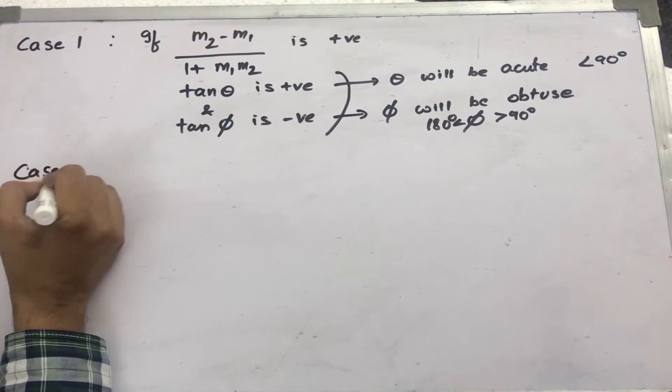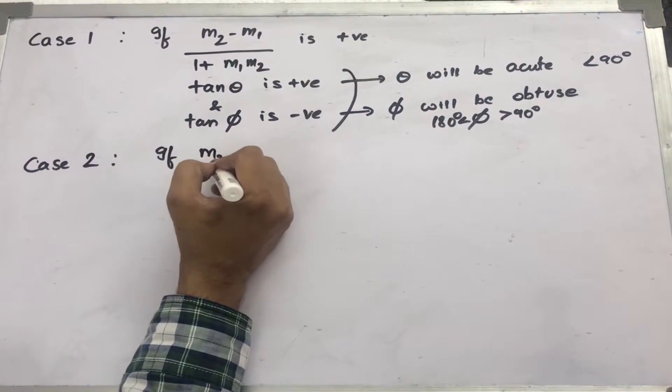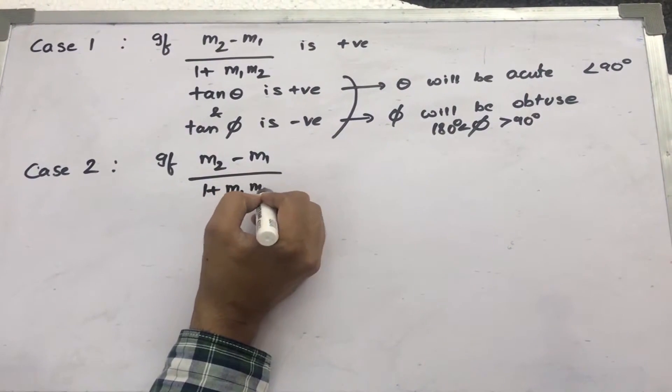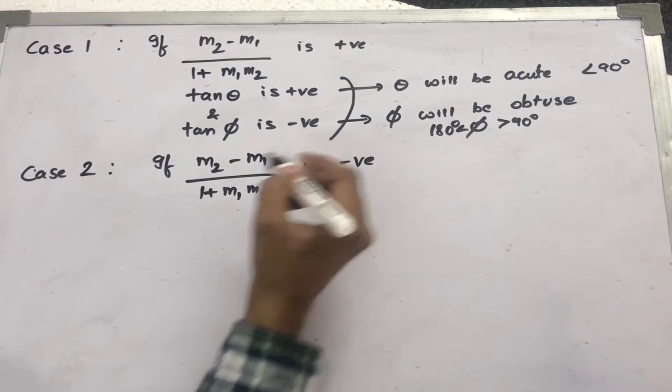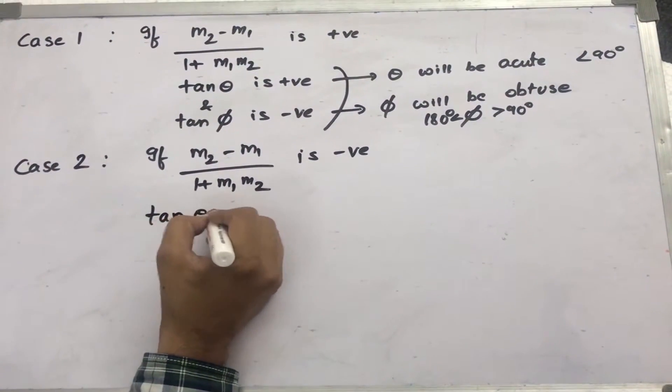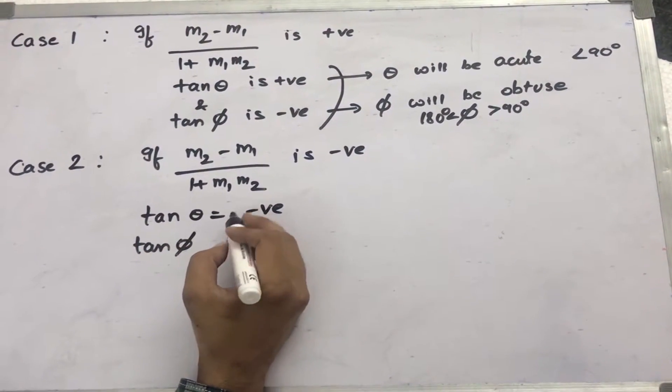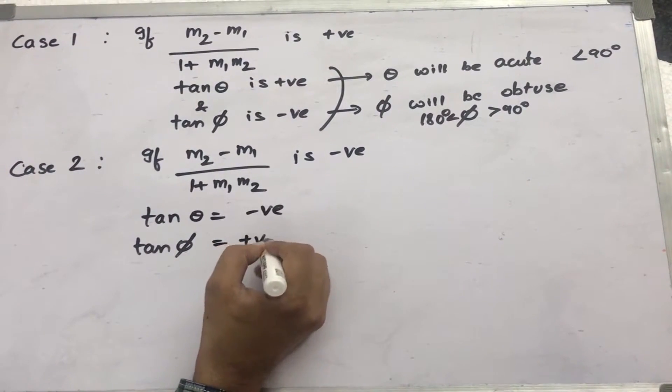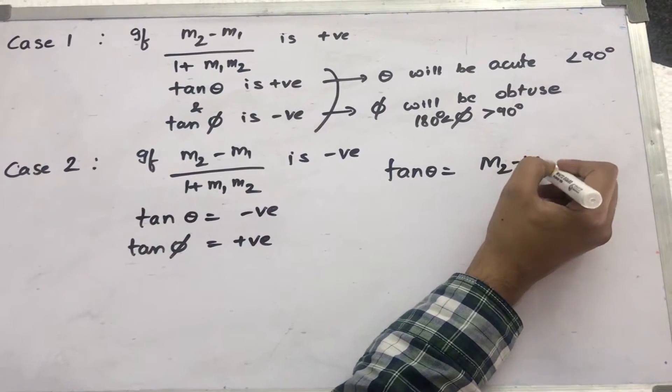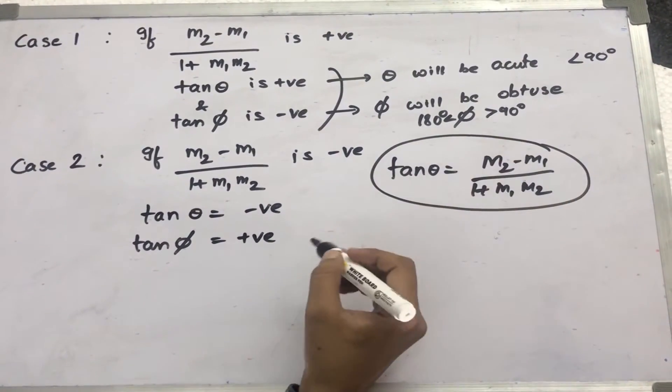Case 2: if m2 minus m1 divided by 1 plus m1 m2 is negative, then tan theta is negative. Then tan phi is positive, because tan theta equals m2 minus m1 divided by 1 plus m1 m2.